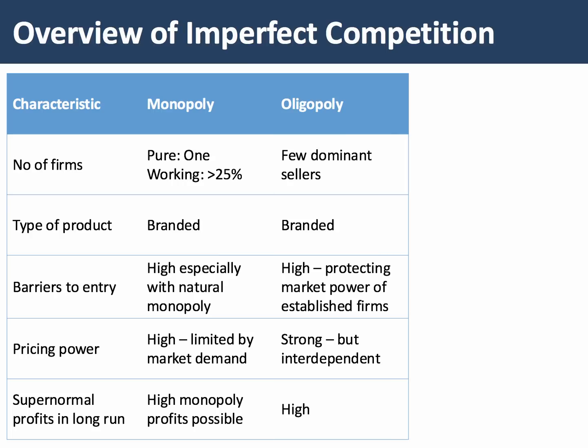In an oligopoly, it's a market dominated by a few sellers. There may be many more firms, but a few dominate. The C5 concentration ratio is assumed to be more than 60%. Products are branded, which is really quite important. And there are barriers to entry, particularly protecting the market power of established firms who have managed to scale their production. Pricing power is strong in oligopoly, but interdependent — firms have to consider the likely reaction of competing firms. But profits are expected to be high because of barriers to entry.